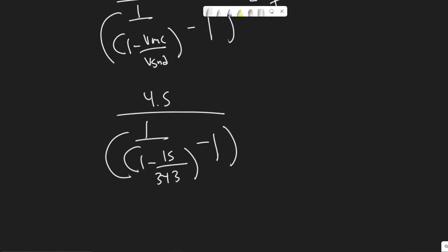Then we just minus one. So let's go ahead and plug this in. So one minus 15 divided by 343. We'll minus one from that. So we have one divided by this, and then you're just plugging this in. So 4.5 divided by this. Just go ahead and plug this in. You're going to get 98.4.